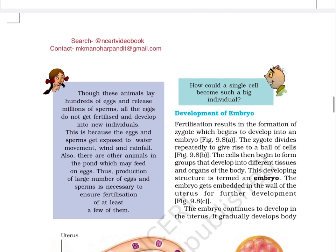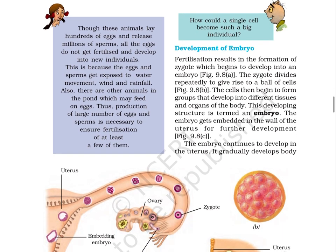Page 104. Though these animals lay hundreds of eggs and release millions of sperms, all the eggs do not get fertilized and develop into new individuals. This is because the eggs and sperms get exposed to water movement, wind and rainfall. Also, there are other animals in the pond which may feed on eggs. Thus, production of a large number of eggs and sperms is necessary to ensure fertilization of at least a few of them.